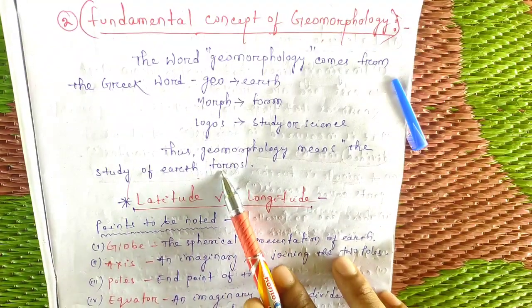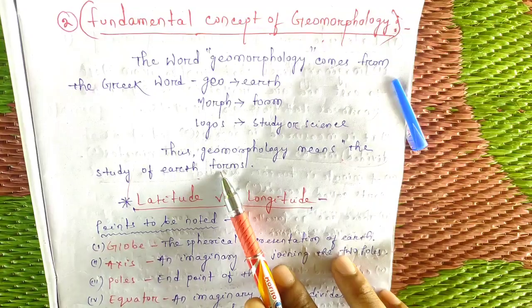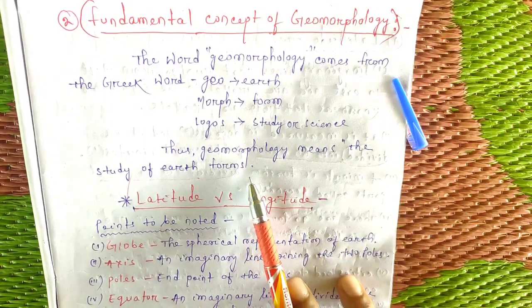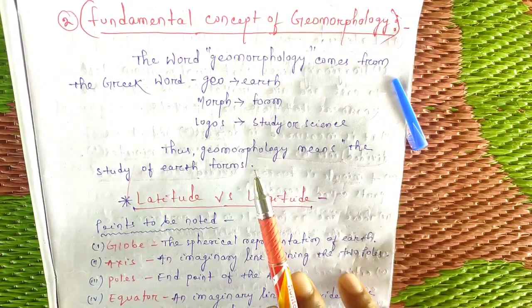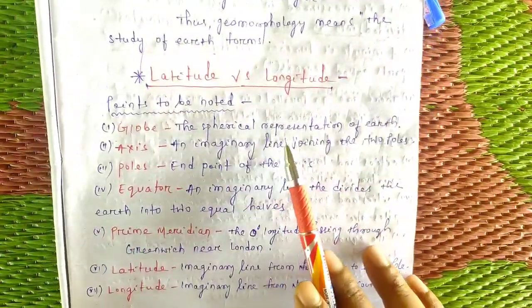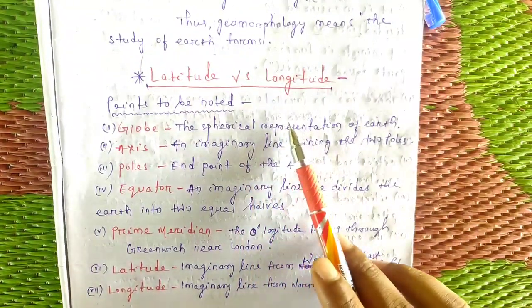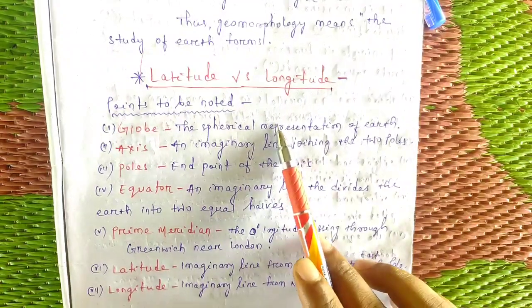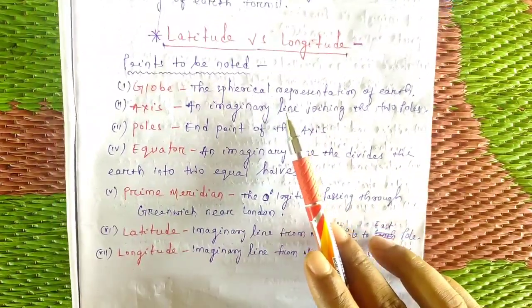Now we move to longitude and latitude. We start to see longitude and latitude, which fully describe location on the earth.